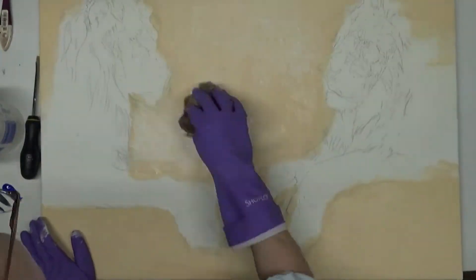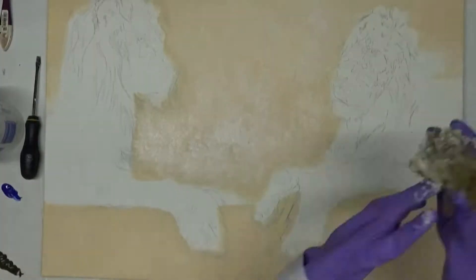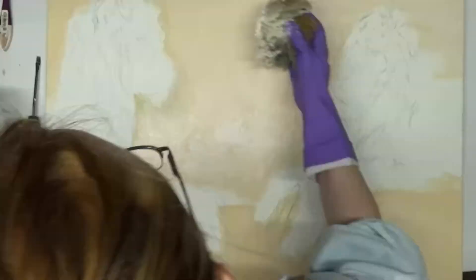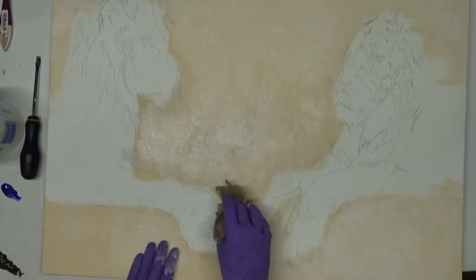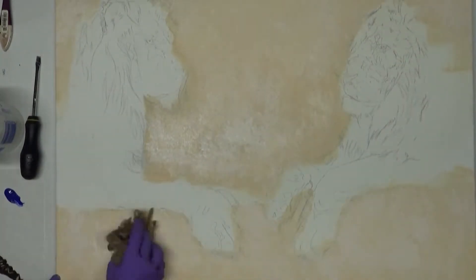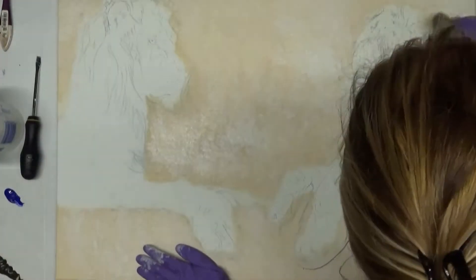You could typically find these in Home Depot kind of areas. You can find them at Hobby Lobby, craft stores, and you can even find them at Walmart. You want to really make sure that you're changing how you're holding your sponge and the directionality of it, otherwise you can wind up getting a lot of repeated patterns.